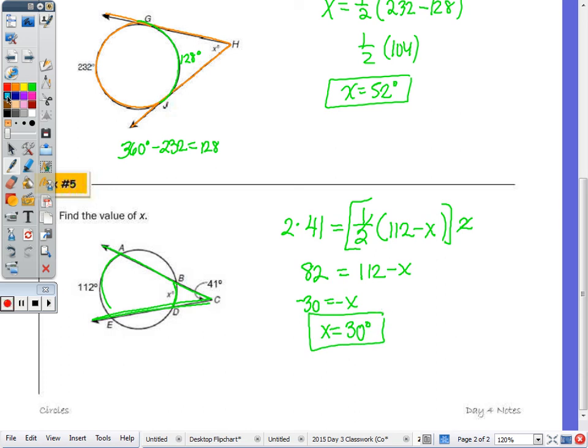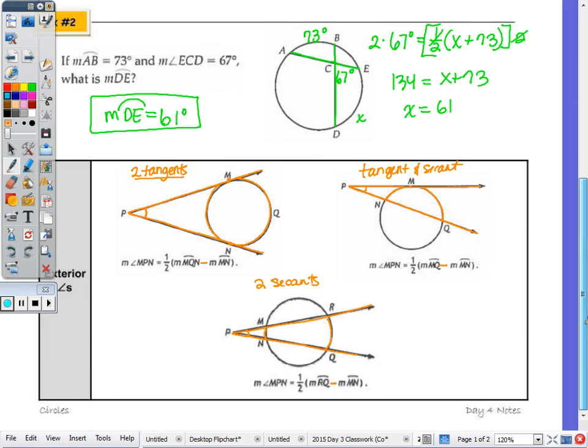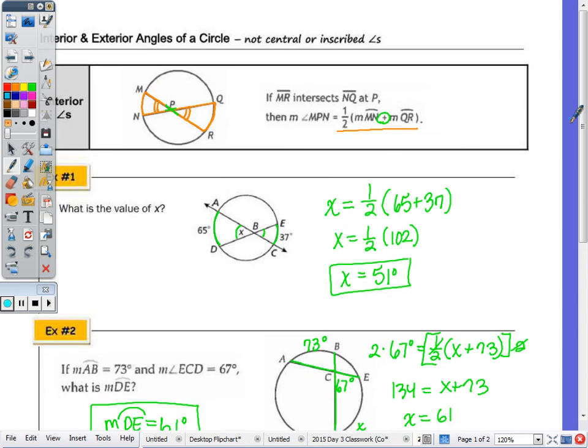Just to recap before we go for today, when we have an exterior angle, it's half the difference of the two arcs. When I have an interior angle, it's half the sum.